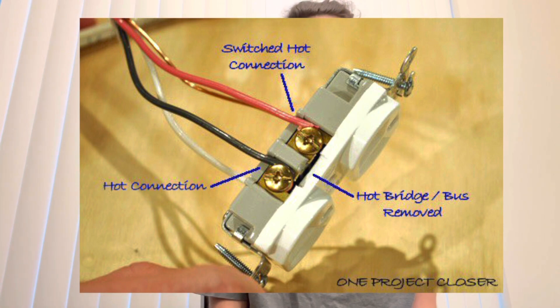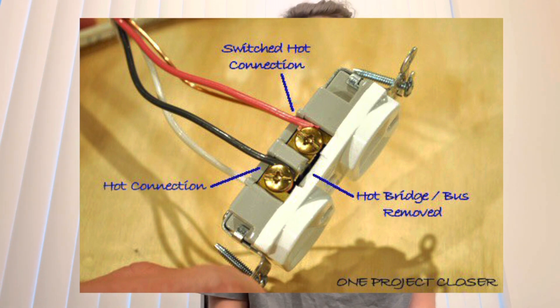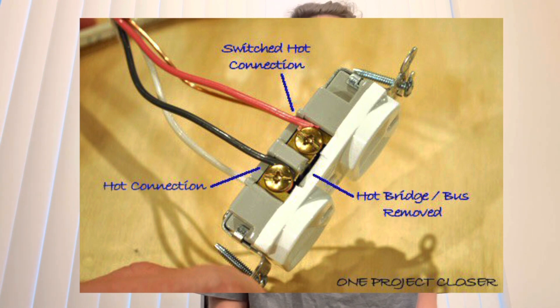Going through the video I did miss a few things. One of those was the half hot, which is the receptacle that has half of the plug controlled by a switch — we've gone over this in the garage several times. Basically it's just a regular receptacle with the hot tab broken, then a constant hot on the bottom and a switch wire on the top for the switch application.